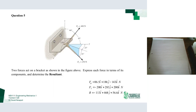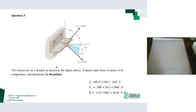Question five gives us a problem looking at two forces acting on a bracket, as you can see in the figure. We have F1 coming off in one direction — a three-dimensional force — and F2 coming off in another direction, also a three-dimensional force. We're asked to determine the resultant, which is the result of the two forces expressed as one single vector.